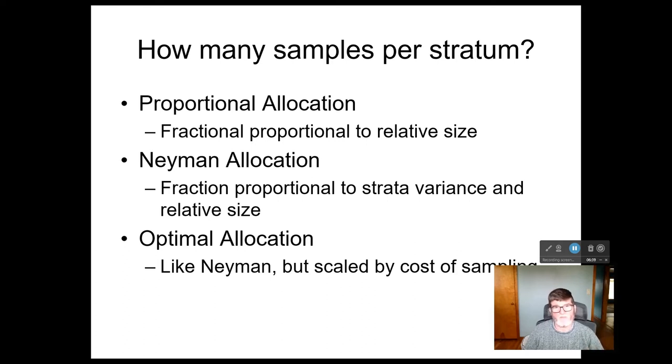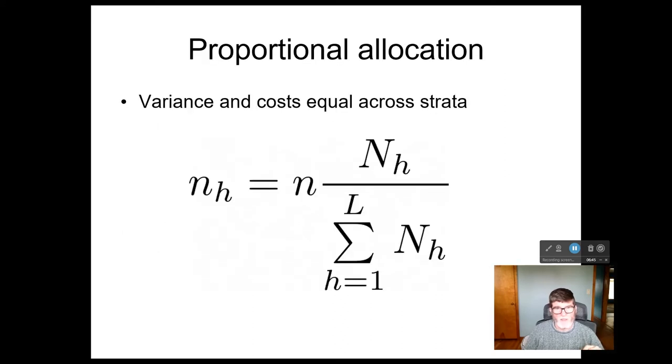So Neyman allocation will be optimal if the sampling is the same cost wherever you are, whichever stratum you're in. But if that's not true, then you need to do something slightly different. So the proportional allocation is pretty simple. We just have the number of sample units in a stratum H. We divide that by the total number of sample units, which is just going to be the sum of the number of units in all of the L stratum. That could give us a fraction between zero and one. We multiply by our sample size n, and that tells us how many units to put into each of our strata. So that's if the variances and the costs are equal across all strata, that allocation will give us the smallest possible variance.